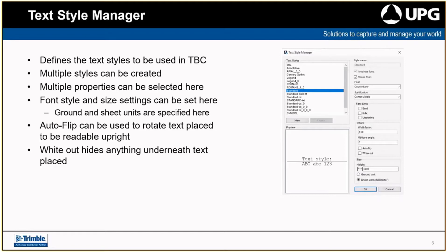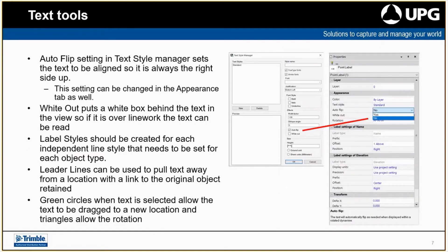There is an auto flip option which determines whether the text is placed upside down or not depending on the direction of the line. There's also a whiteout option in the Text Style Manager to hide anything underneath the text. If you're putting text down and don't want anything underneath - such as line styles for detailed feature surveys - the whiteout option should be used so you can see the text without interference from anything behind it. The auto flip will flip text from upside down to right-side up automatically for everything using that text style.